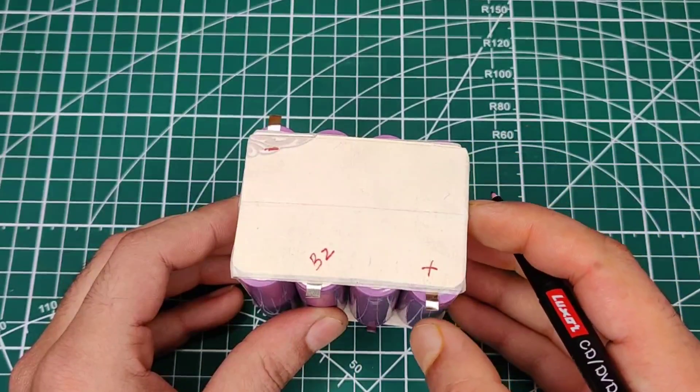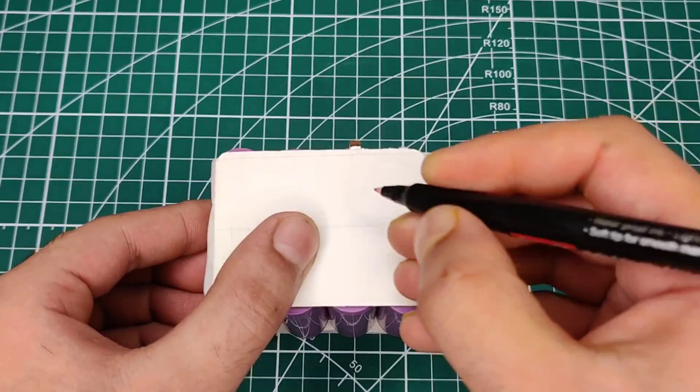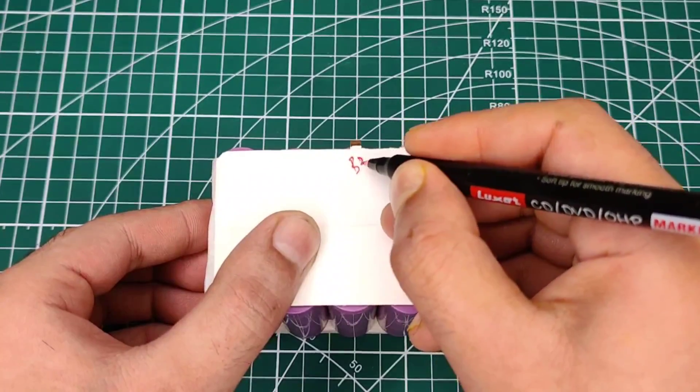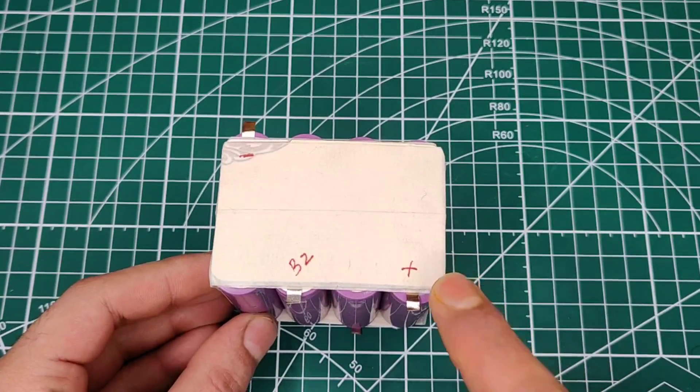And also third battery packs positive is connected with fourth battery packs negative, so here mark as B3. And this is fourth battery packs positive.